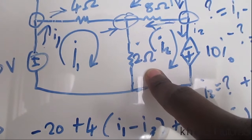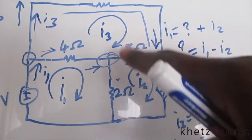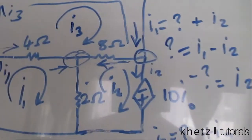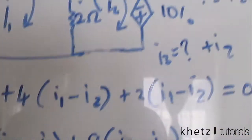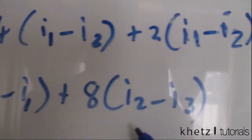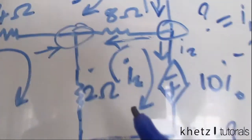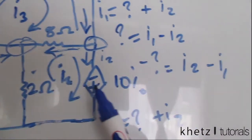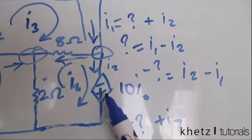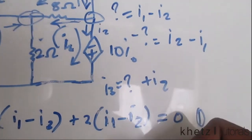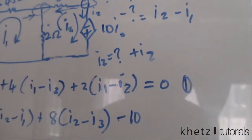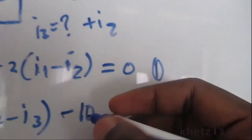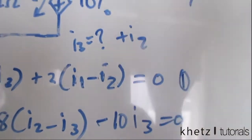Then we come to the dependent voltage source. I.2 encounters the negative terminal of this source first. So we're going to have negative 10 multiplied by I.O. We said I.O is equal to I.3, so we can simply substitute I.3 in here. That goes to zero. That is our second equation.